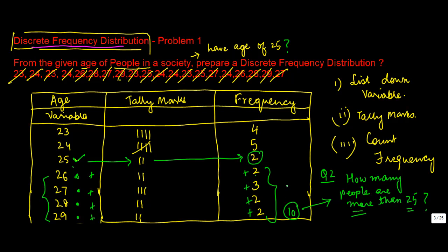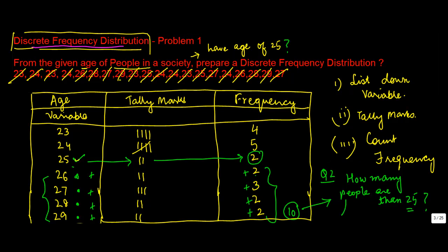Similarly, if instead I asked how many people are less than 25, those are people aged 23 or 24. I would add up 4 plus 5, and the answer would be 9. You can now use this distribution table to find answers to various questions.